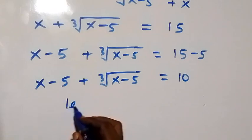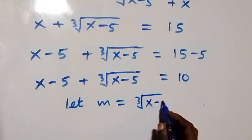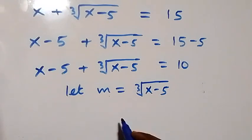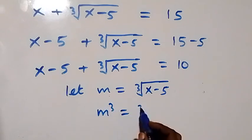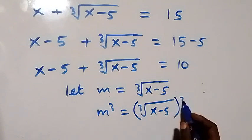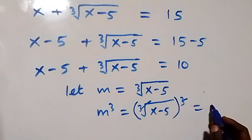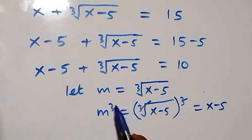Let's represent the cube root of x minus 5 with a letter. Let m equal the cube root of x minus 5. Taking the cube on both sides, m cubed equals x minus 5. So we can now make this substitution: instead of writing x minus 5 we write m cubed, and instead of writing the cube root of x minus 5 we write m.